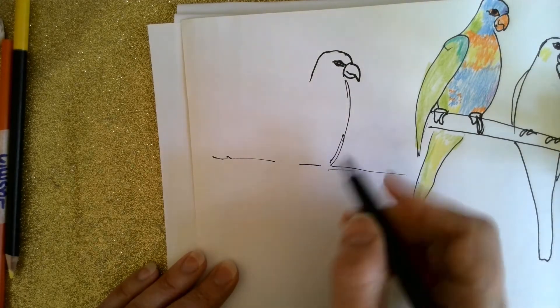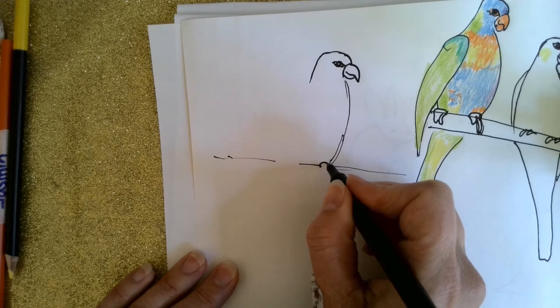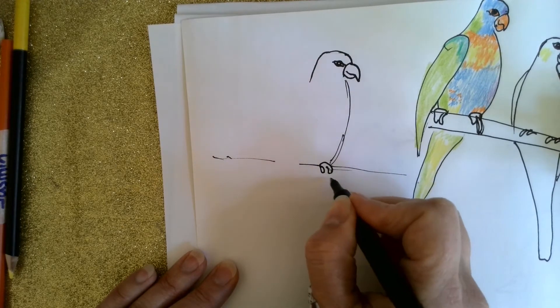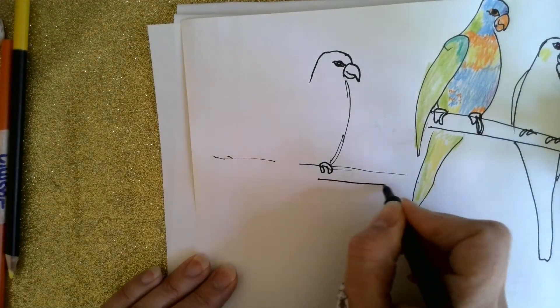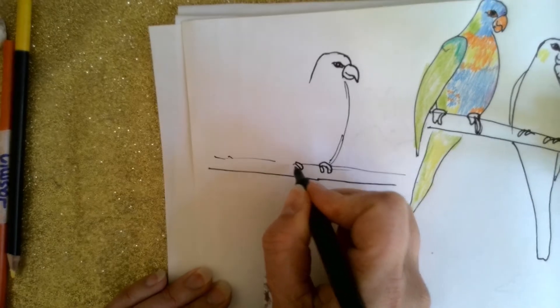Like a branch that it's perching on. So then the feet, I'm going to be going over the top here and clinging onto this branch, and do the other one.